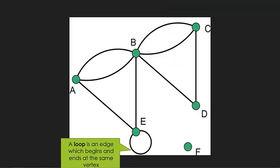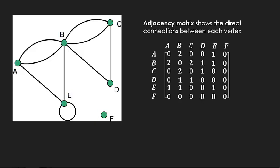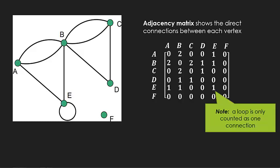A loop is a special type of edge which begins and ends at the same vertex. An adjacency matrix shows the direct connections between each vertex. The way it is set up is basically like a table but in a matrix form. We can see here the column headers and the row headers are just the labels from the vertices. Each of those numbers show the number of edges connecting between the two. As we're reading across row A, we can see there are zero connections from A to A, so there's no loop at A. There are two connections from A to B. There is one connection from A to E. The thing to note with the loop though, we do have a loop at E and it is only counted as one connection. Be aware that a loop is only ever counted as one in an adjacency matrix.